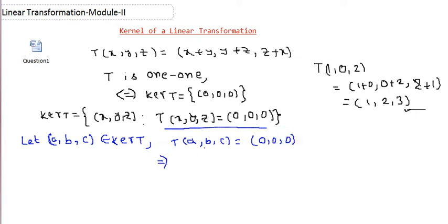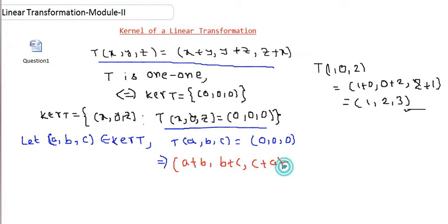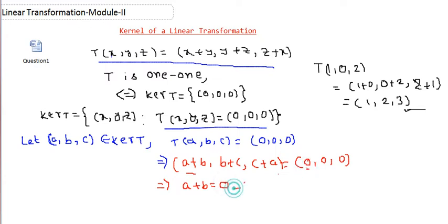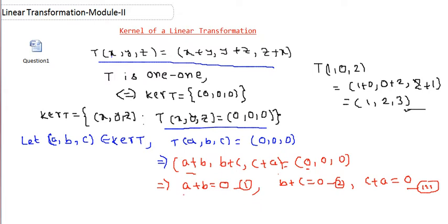What is the definition of T(a,b,c)? Here x=a, y=b, z=c, so we get T(a,b,c) = (a+b, b+c, c+a) = (0,0,0). Since these two vectors of R³ are equal, each component must be equal. So we get: equation 1: a+b = 0, equation 2: b+c = 0, and equation 3: c+a = 0.